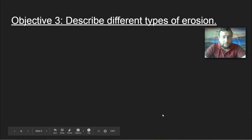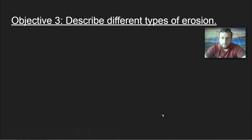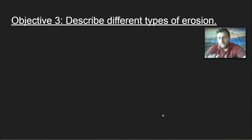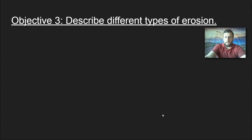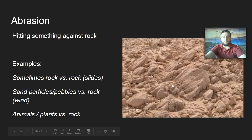Compared to the first two objectives, this is going to be a much longer video. This is part of the Water in the Earth series. In this one, we're going to break down the different types of erosion — pun intended — as well as the factors that affect the rate of erosion and how humans play a factor in the whole thing.